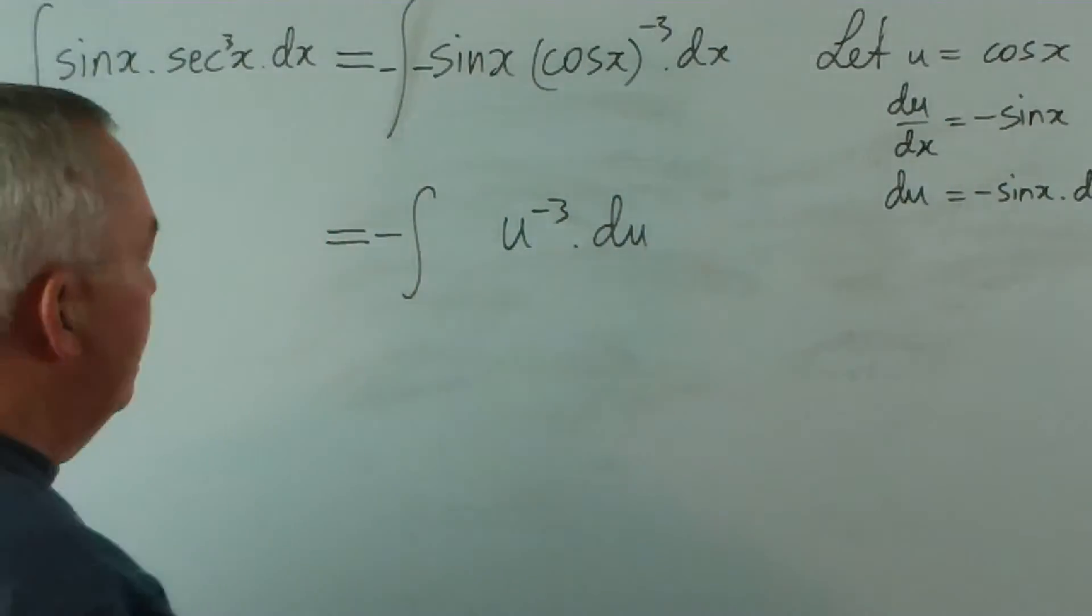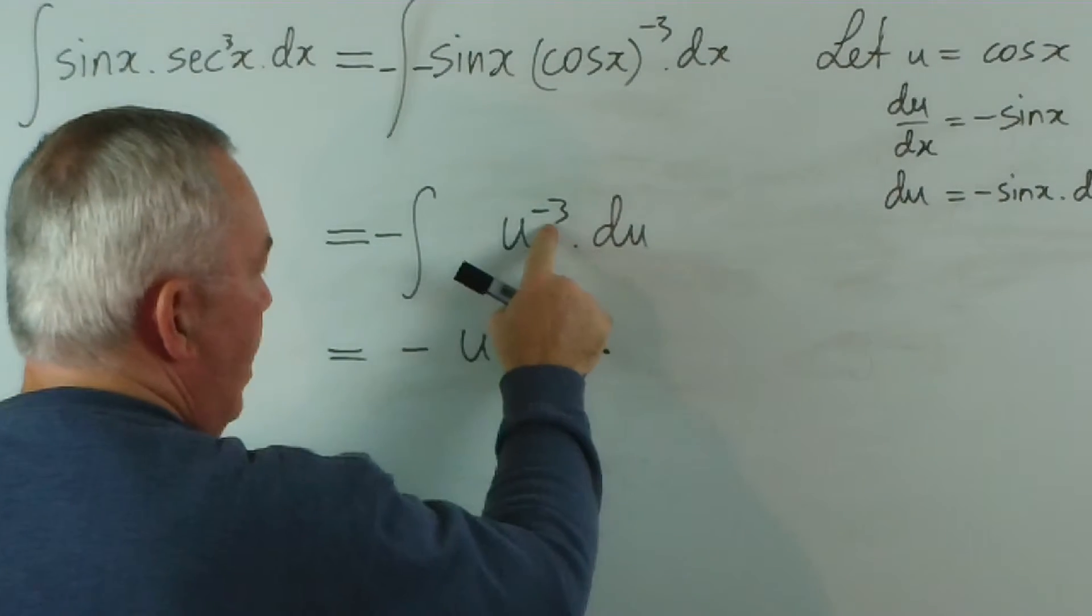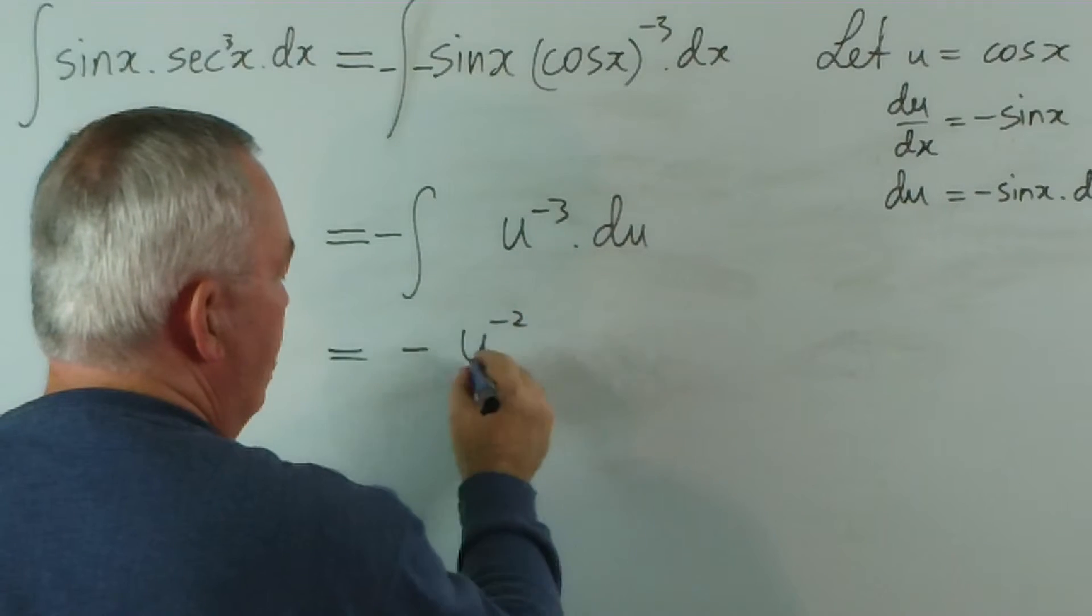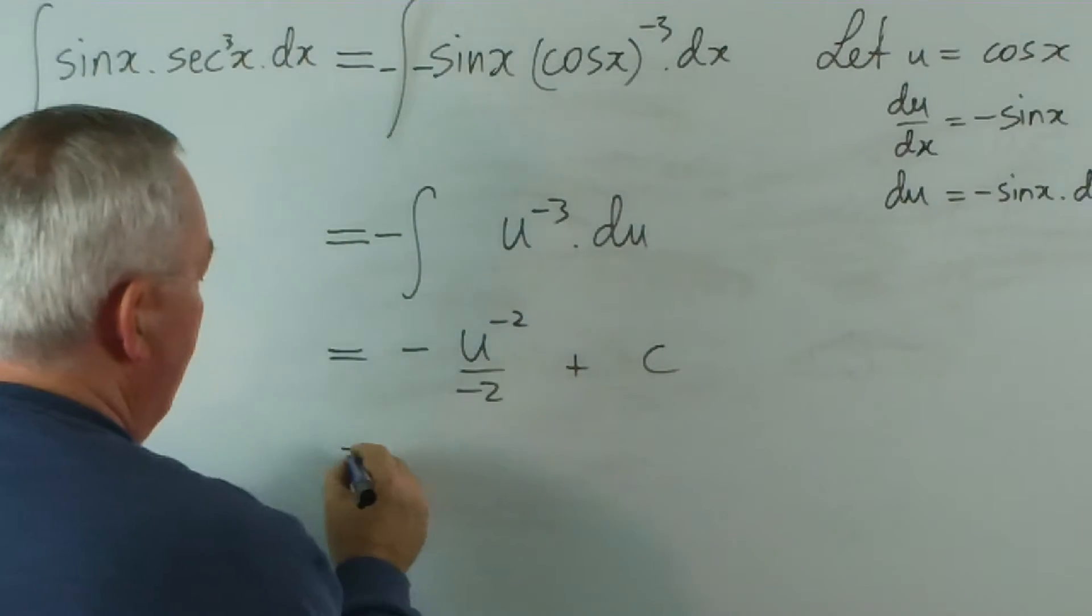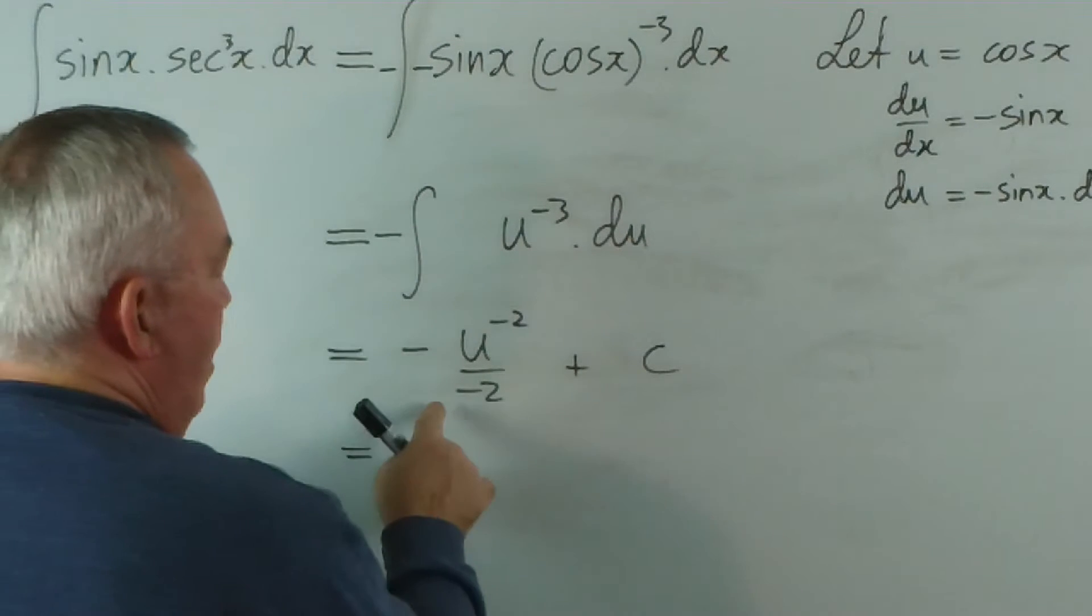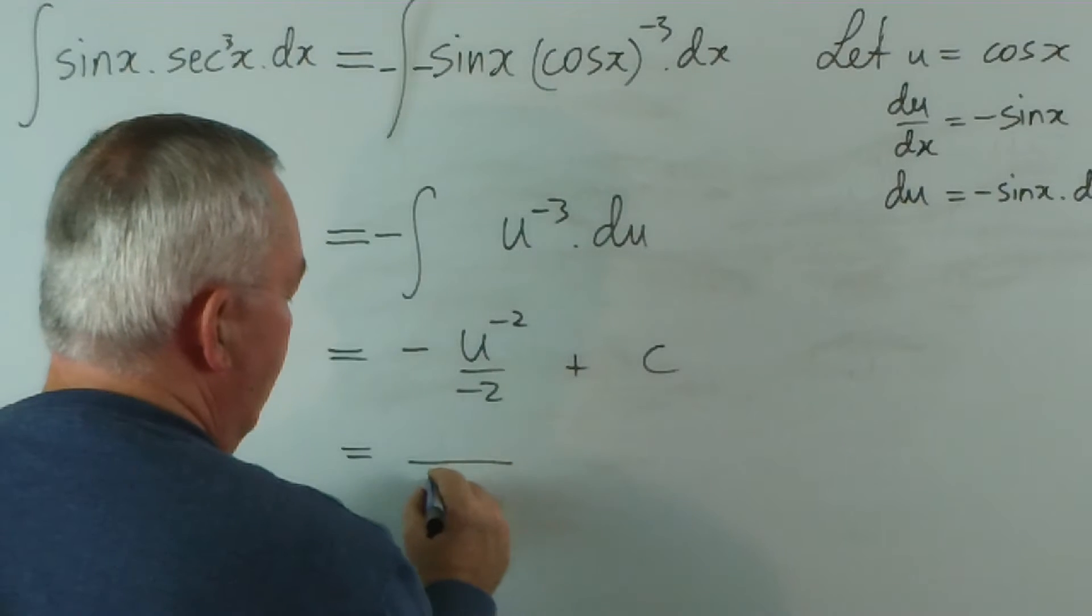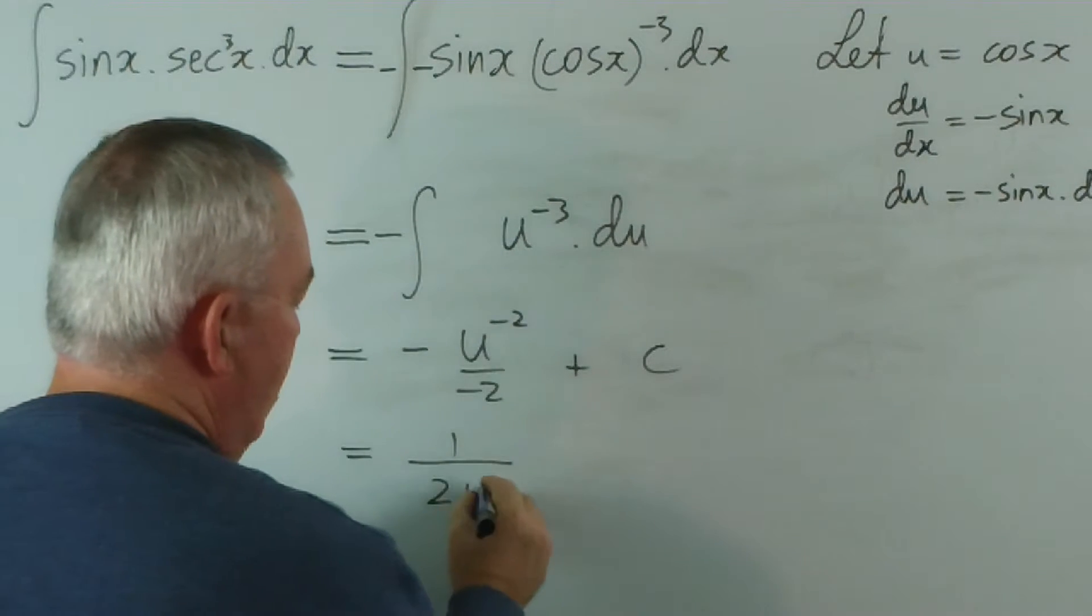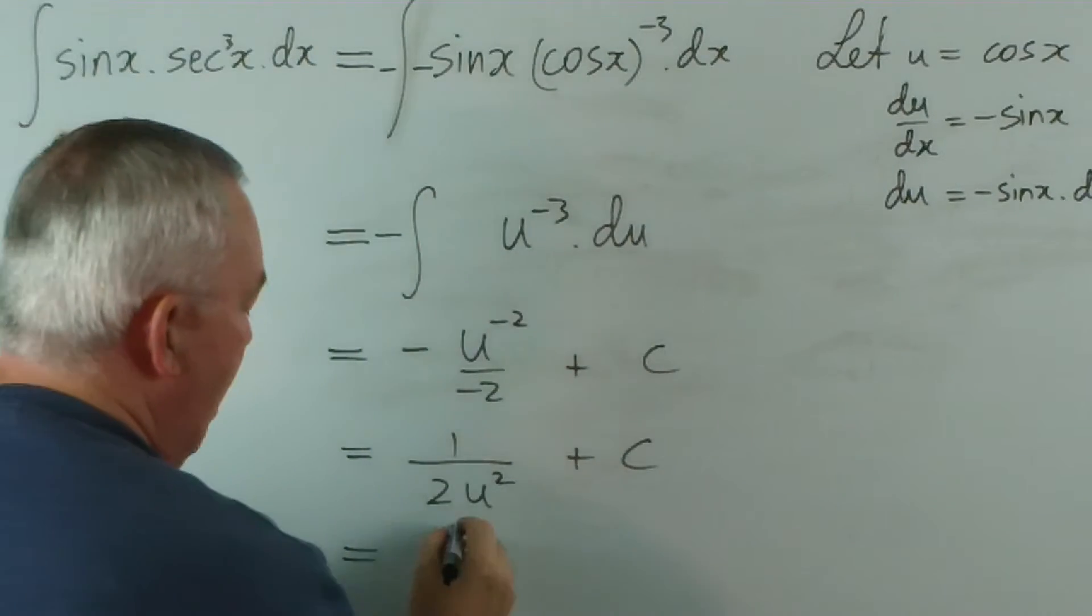We would get, raise this power by 1 to negative 2 over negative 2 plus c. The two negatives at the front make a positive, but the 2 would stay on the bottom. And u to the negative 2 would be u squared on the bottom. And then we would substitute back.